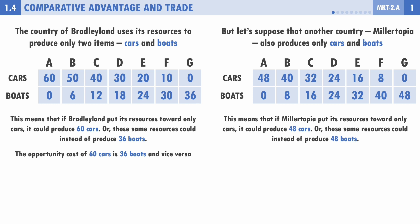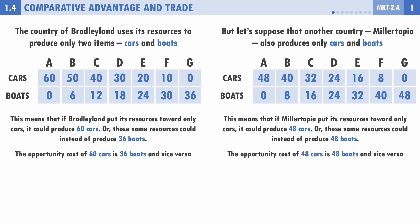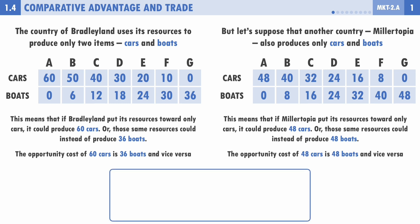When it comes to Millertopia, if they put all their resources toward just cars they could produce 48 cars, or toward just boats, 48 boats, or anything in between. The opportunity cost for Millertopia of 48 cars is 48 boats and vice versa. Because both countries have constant opportunity costs, we can combine this information into a simple table with Bradley Land and Millertopia across the top and cars and boats down the left side.